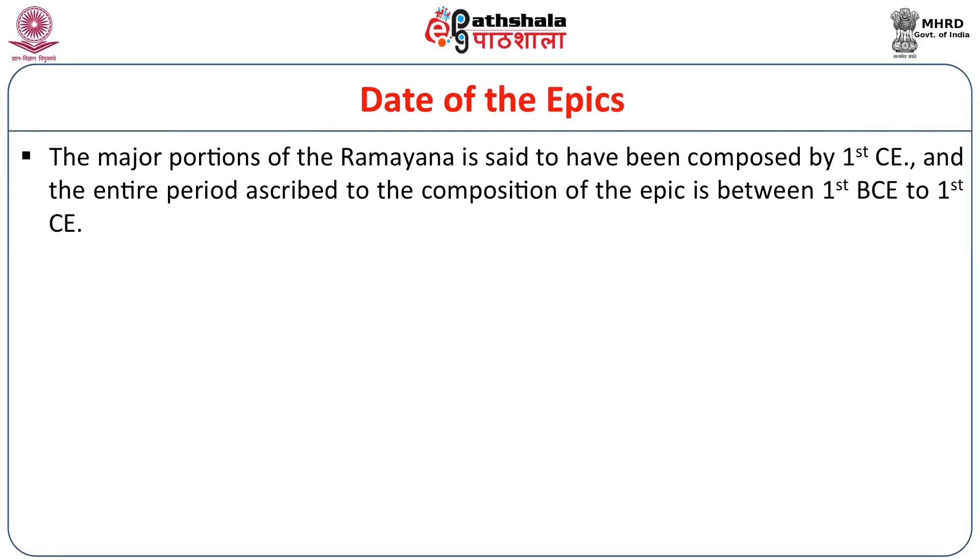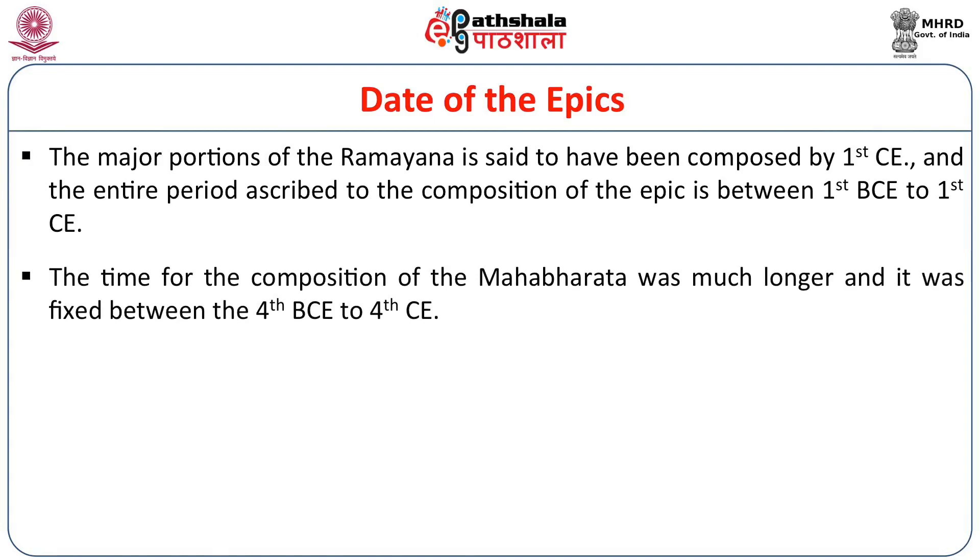The dating of the epics is also a very complex subject. We just can't ascribe any particular date to the epics. We are not sure exactly when they were written because they had an oral tradition and were subsequently written down. With regard to Ramayana, the date ranges from 1st century BCE to 1st century CE, and with regard to Mahabharata it is from 4th century BCE to 4th century CE — a very long date range.